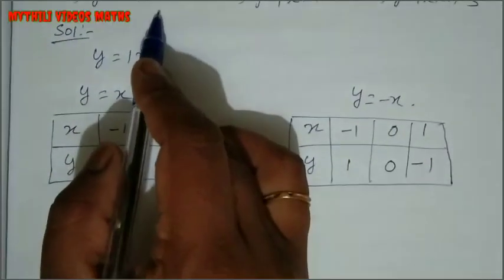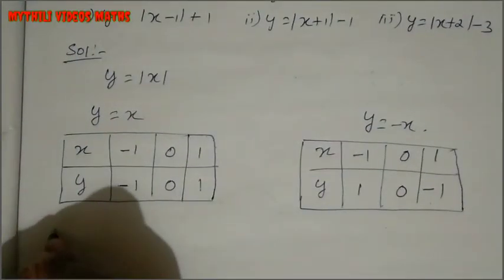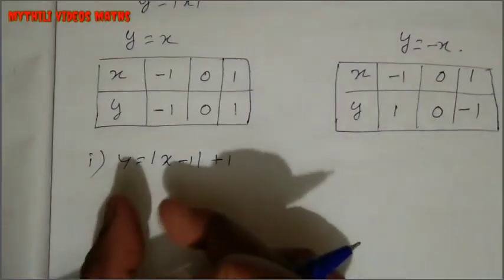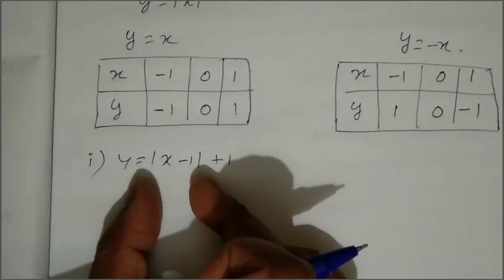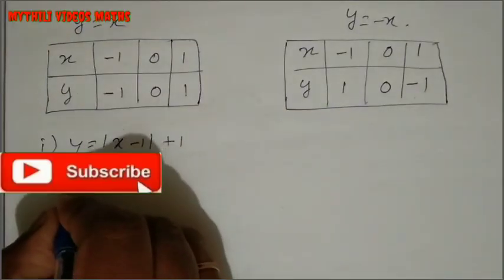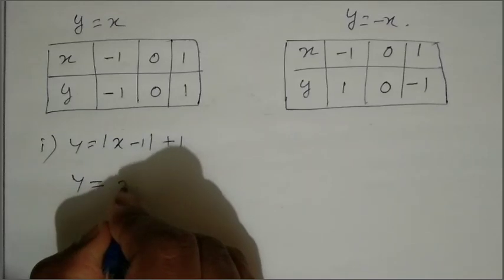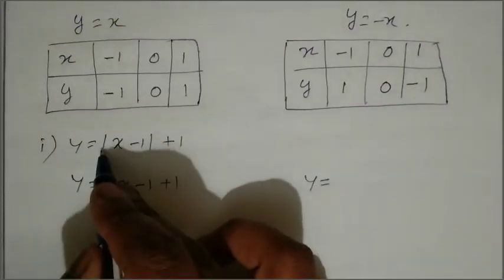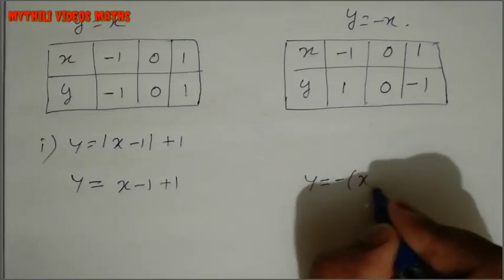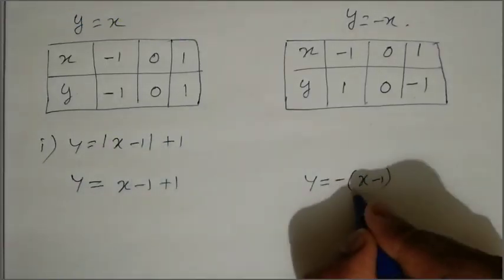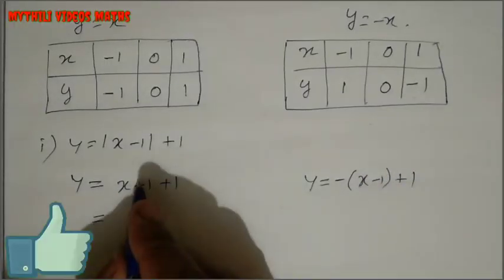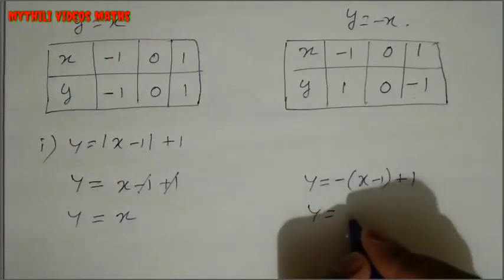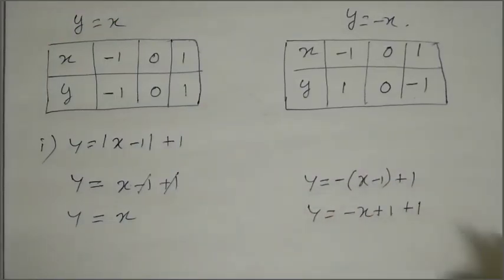Next step: y equal to modulus of x minus 1 plus 1 — this is the first subdivision. For the positive value: y equal to modulus of x minus 1 plus 1, so y equal to x minus 1 plus 1, which gives y equal to x. For the negative value: y equal to minus of x minus 1 plus 1, so minus 1 and plus 1 cancel, giving y equal to minus x, then plus 1 plus 1.